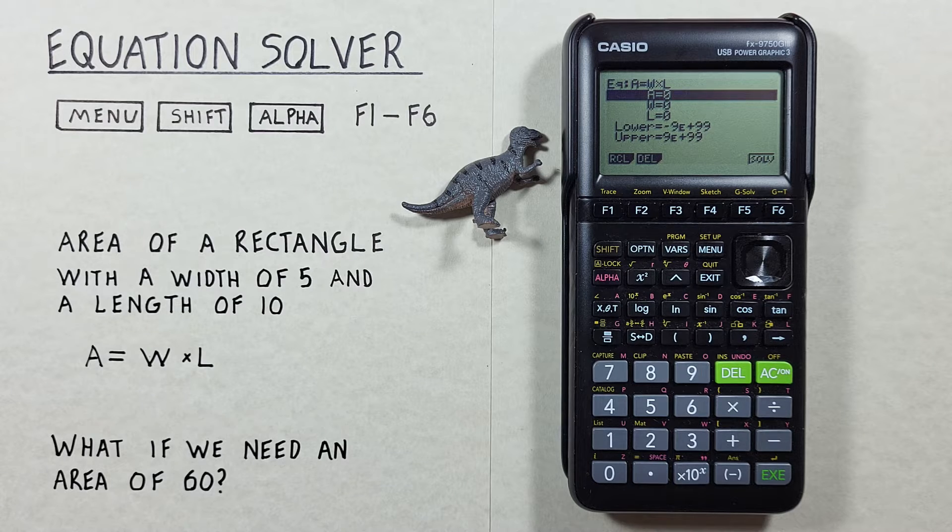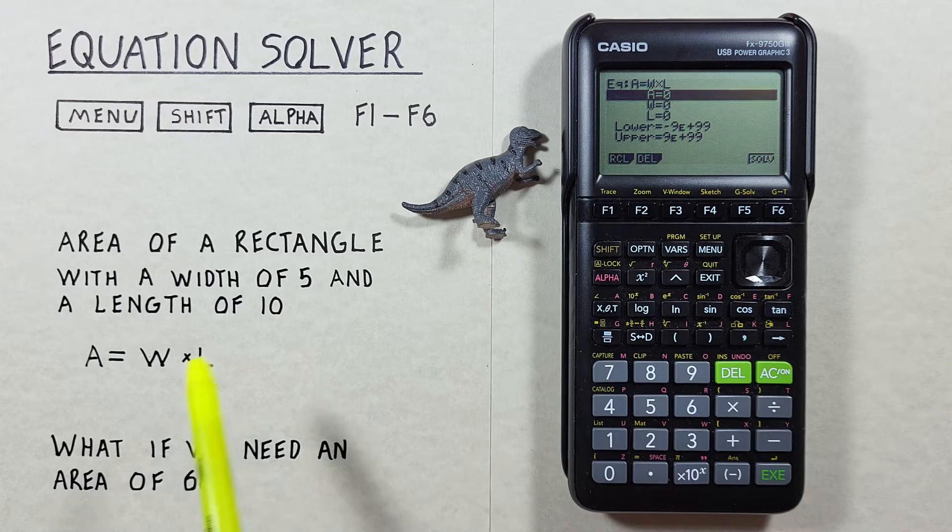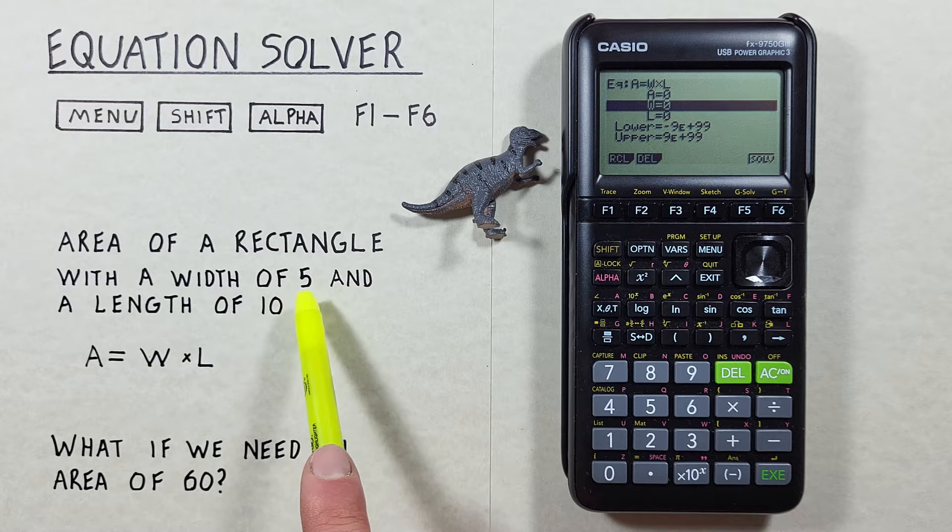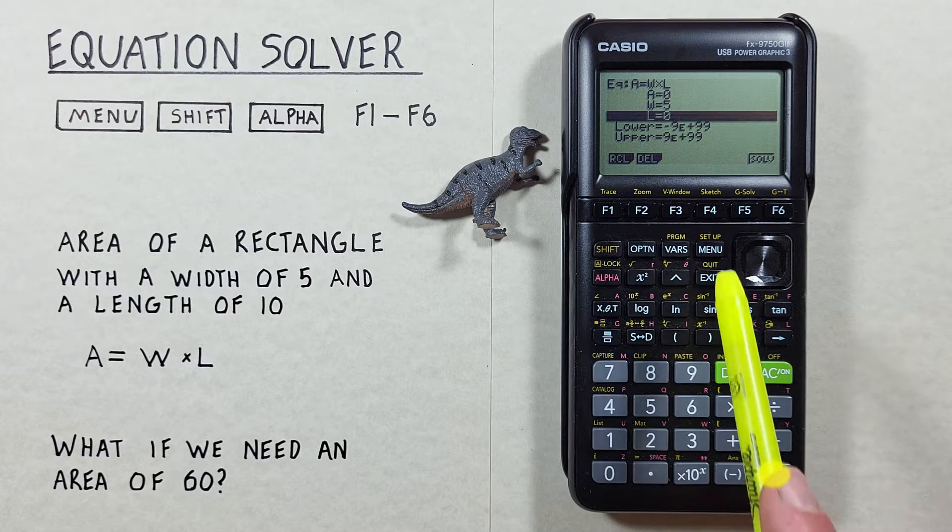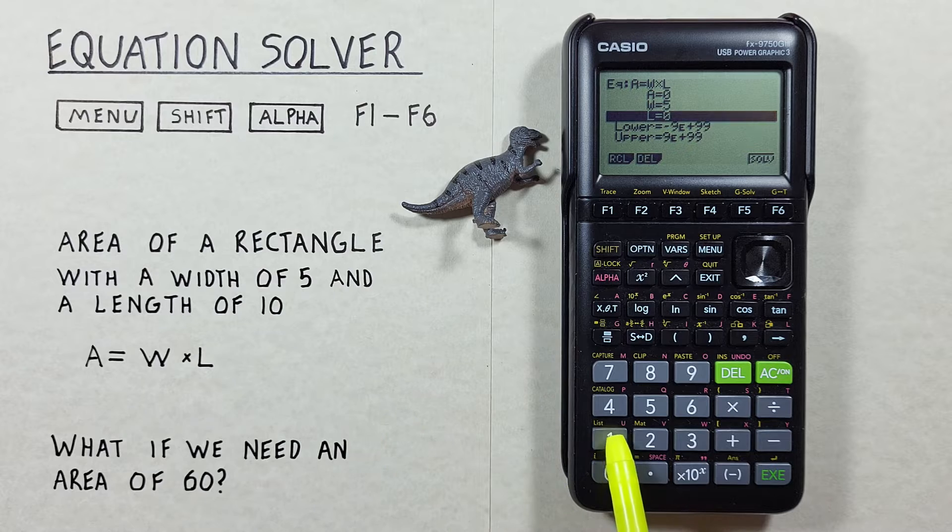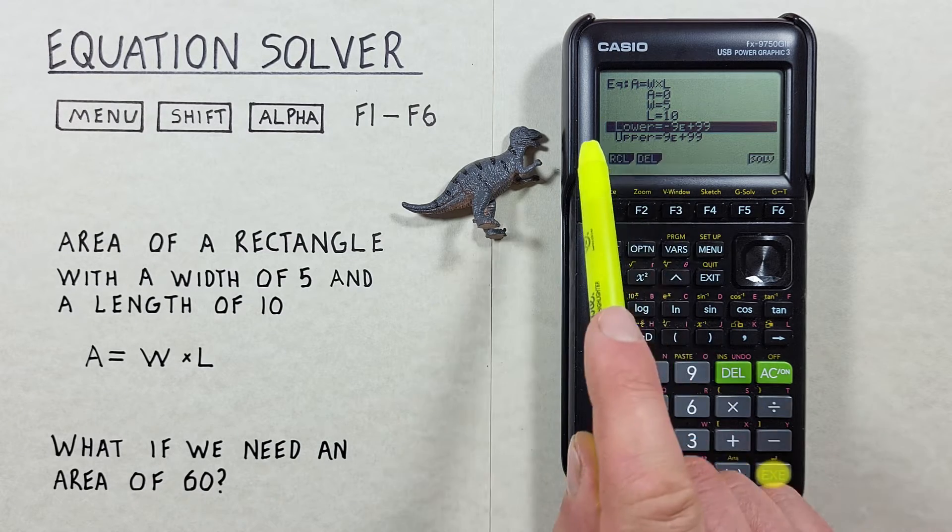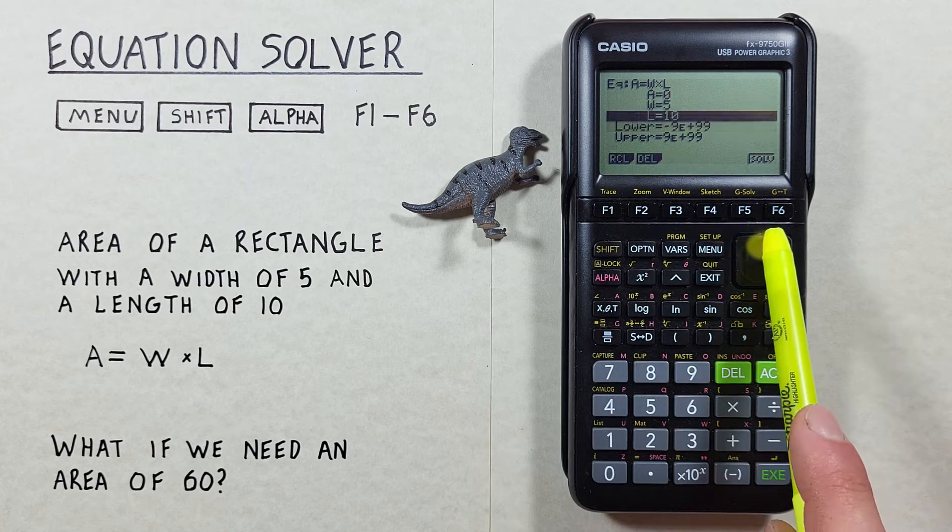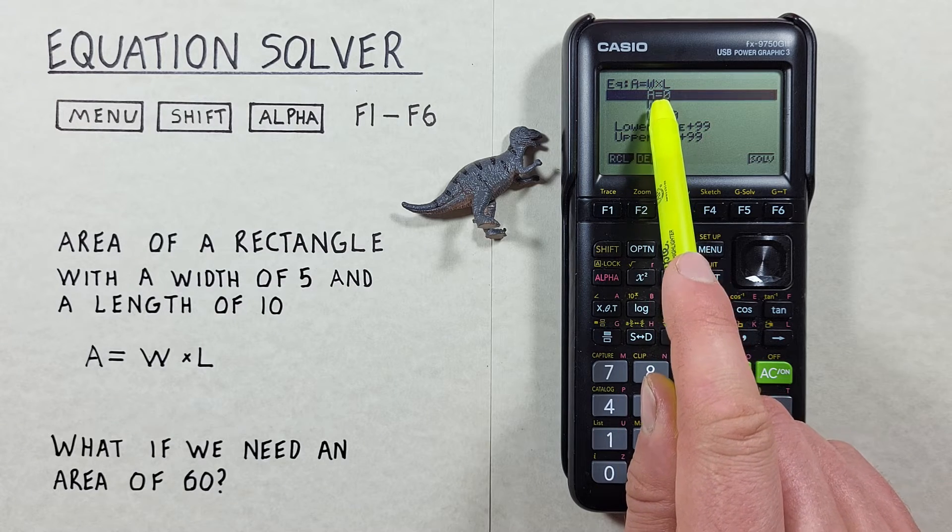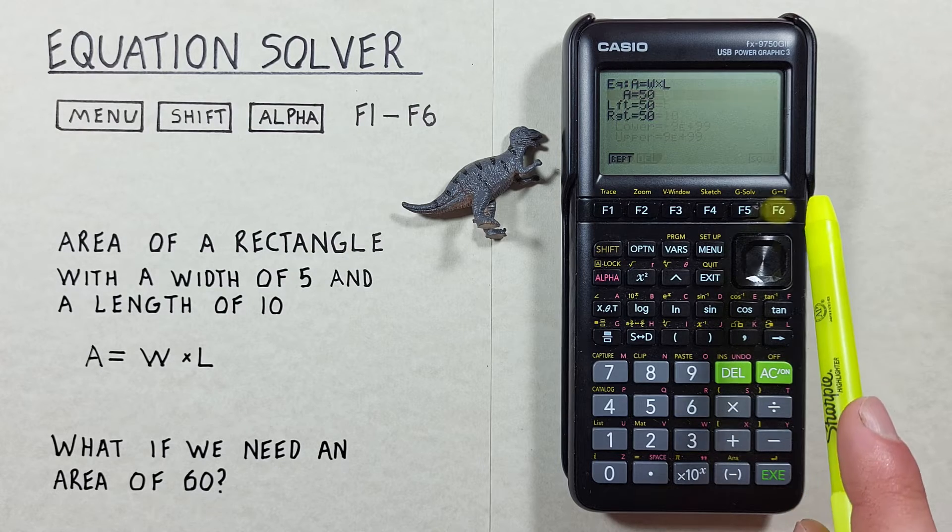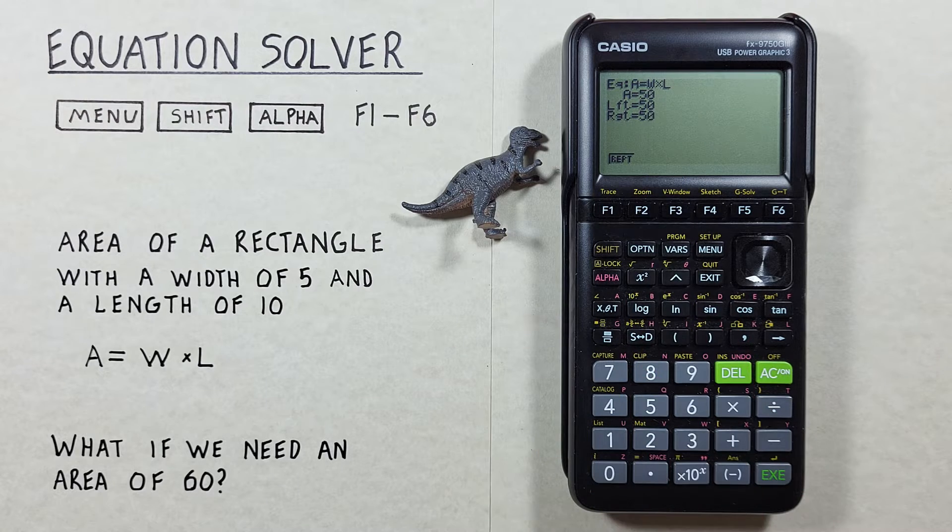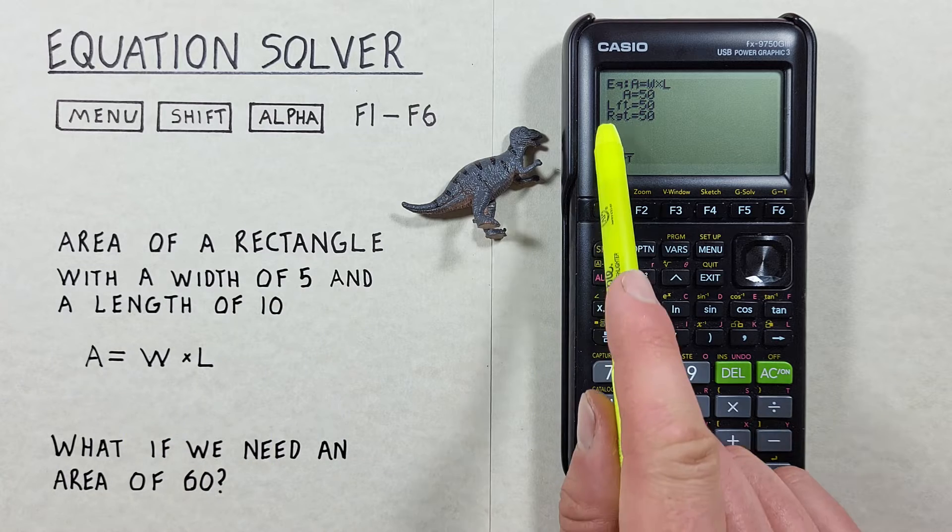We can now go ahead and enter in our known variables. We don't know A, that's what we're trying to solve. So we scroll down to W which we know width of 5, we can hit that and hit EXE to select it. And then length of 10, we enter the 10 and hit EXE. Don't worry about these lower and upper options here. Scroll back up to A, and since this is what we want to solve, we highlight it. And then we see here F6 is solve, so we hit that. And there we go, A equals 50, which makes sense because we know 5 times 10 equals 50. And that's our area.